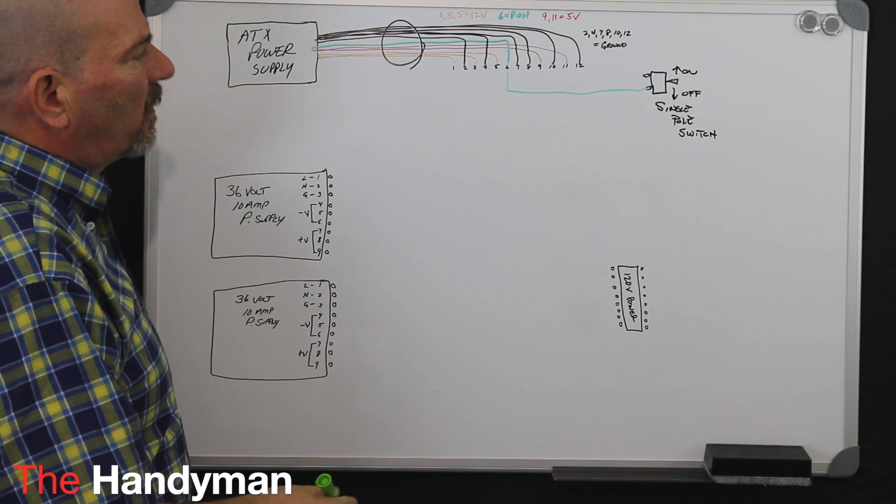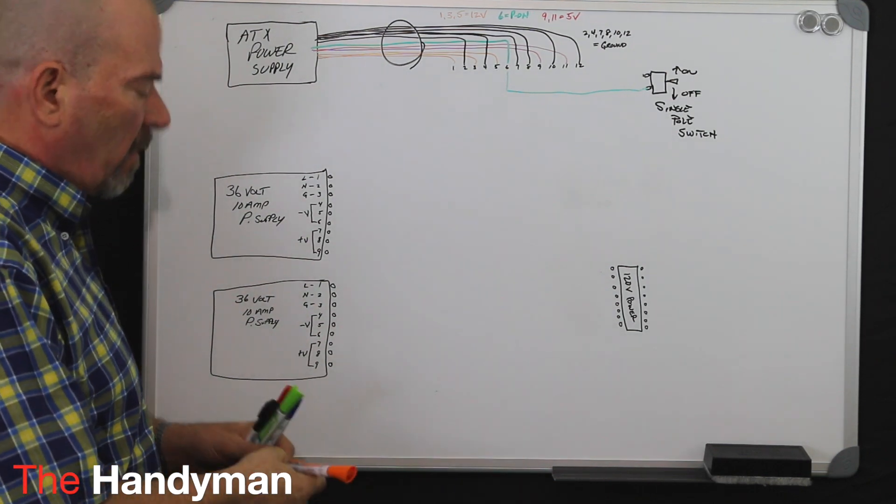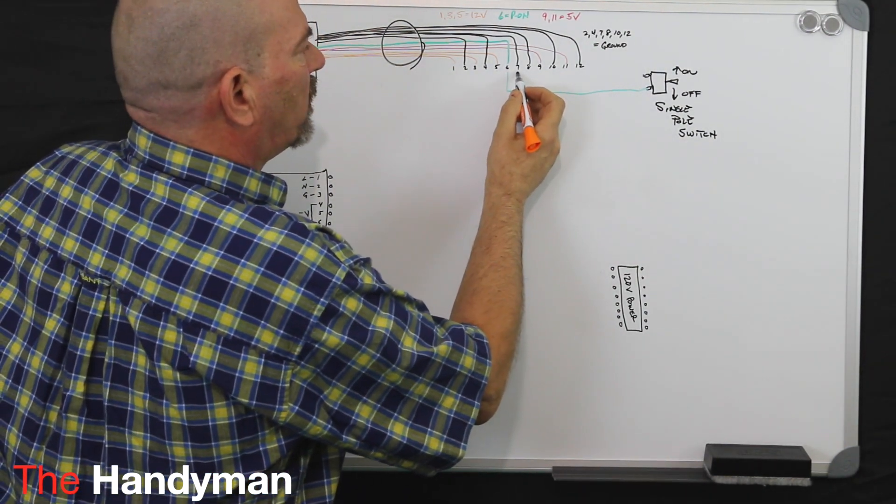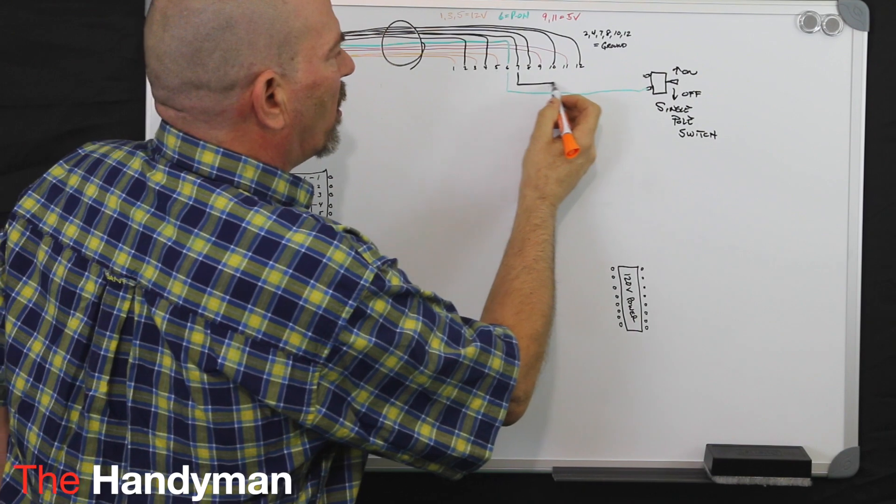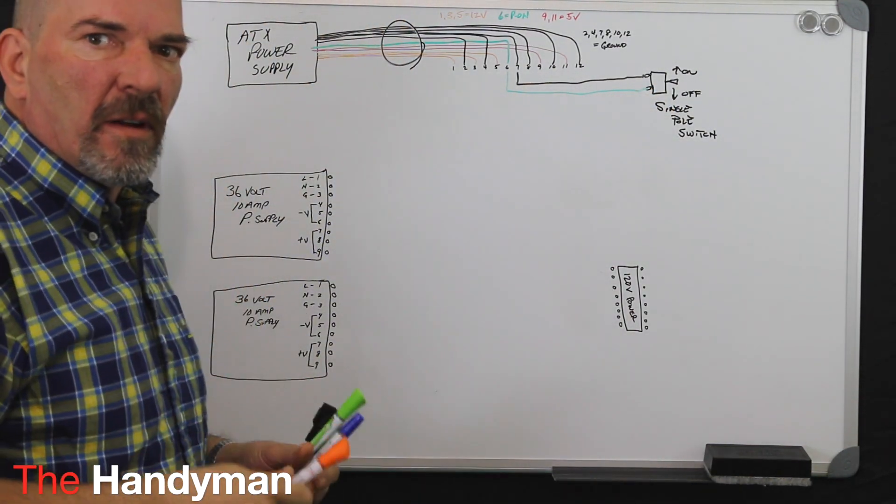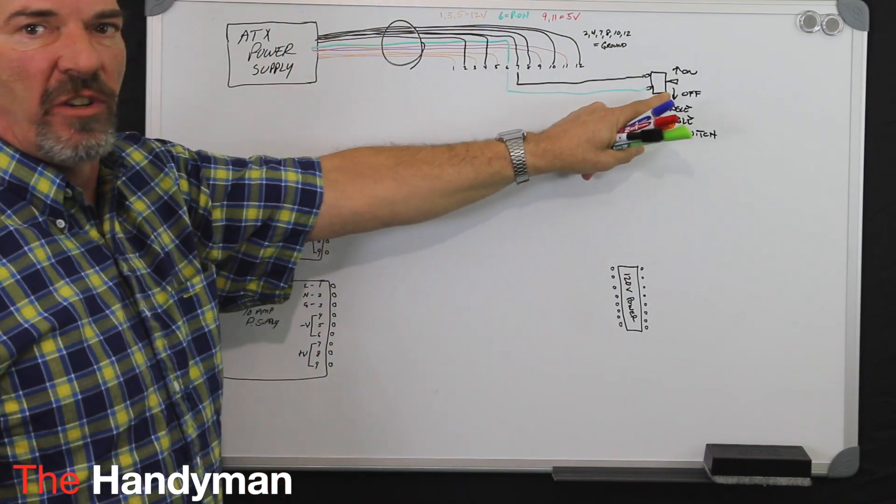For the next part, you're going to take your ground wire, which is paired, whatever one you paired up, and you're going to run that to the switch. That's step one. That's going to power up your ATX power supply when you turn that switch on.